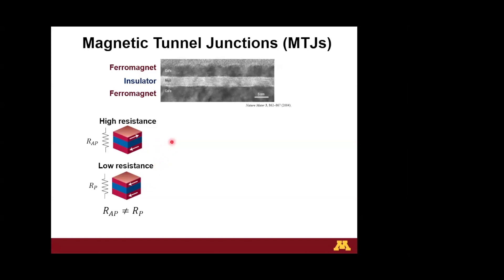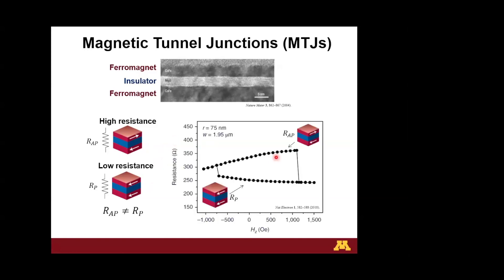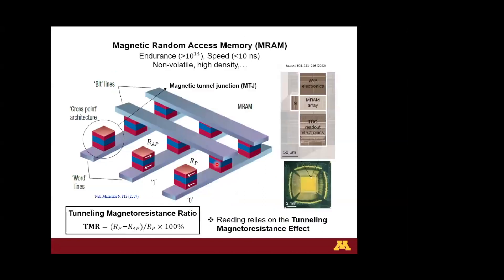Usually the resistance of the anti-parallel configuration is larger than that of the parallel configuration, and this is precisely what the TMR effect is about. In practice, you can switch the magnetization of one magnetic layer by applying a magnetic field while measuring the electrical resistance. Starting from a high-resistance anti-parallel configuration, a sufficiently strong field transitions the system to a low-resistance parallel configuration, and vice versa.